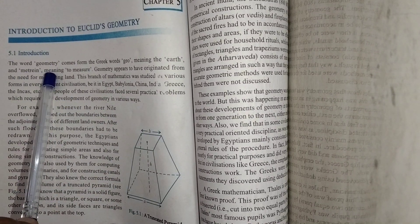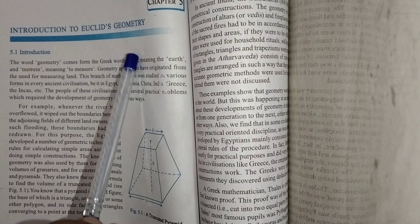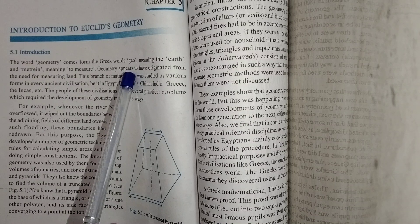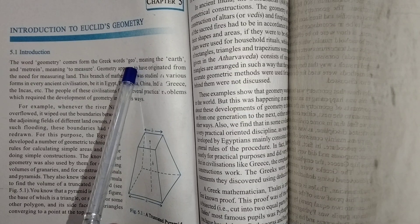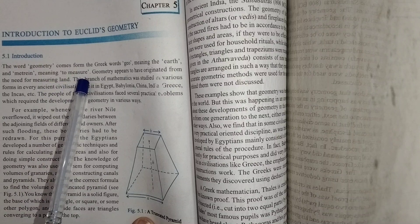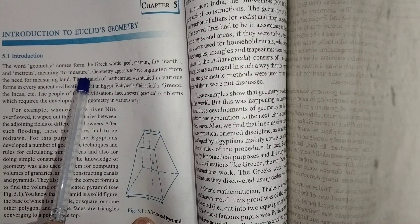Introduction: The word geometry comes from the Greek word geo, meaning earth, and matrin meaning to measure. So earth's measurement is called geometry.